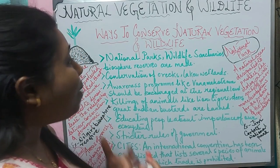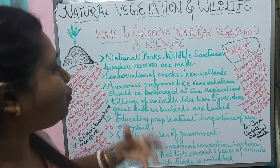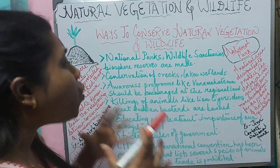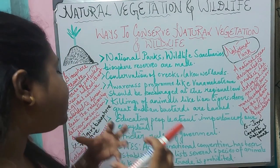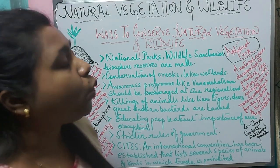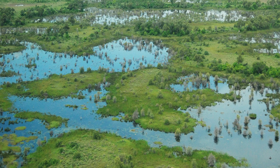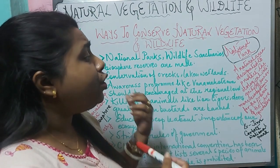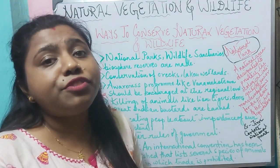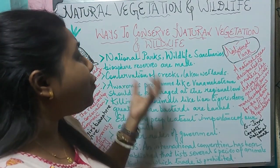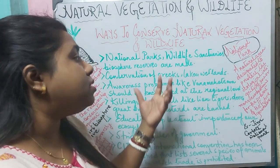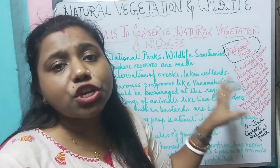We also need to conserve creeks, lakes, and wetlands, which are very important and diverse ecosystems. Wetlands are areas of marshy, biologically diverse ecosystems that are very productive. They help control floods, and different kinds of plants, fish, and migratory birds live and breed there during different seasons. Conserving wetlands, lakes, and creeks allows us to conserve plant life and aquatic marine life, making it an important part of conservation of natural vegetation and wildlife.